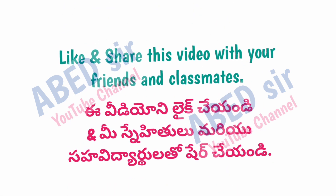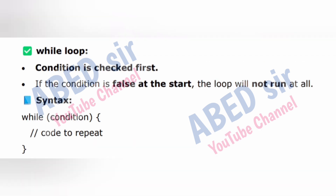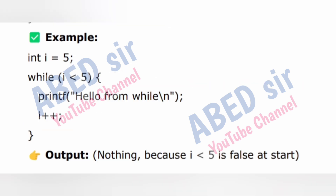Next important long question is 5: Differentiate while statement from do-while statement with example. In C, while and do-while are both loops used to repeat code, but there is a main difference between them. While loop: condition is checked first. If the condition is false at the start, the loop will not run at all. Syntax: while (condition) { code to repeat; } Example: int i = 5; while (i < 5) { printf("Hello from while\n"); i++; } Output: nothing, because i < 5 is false at start.